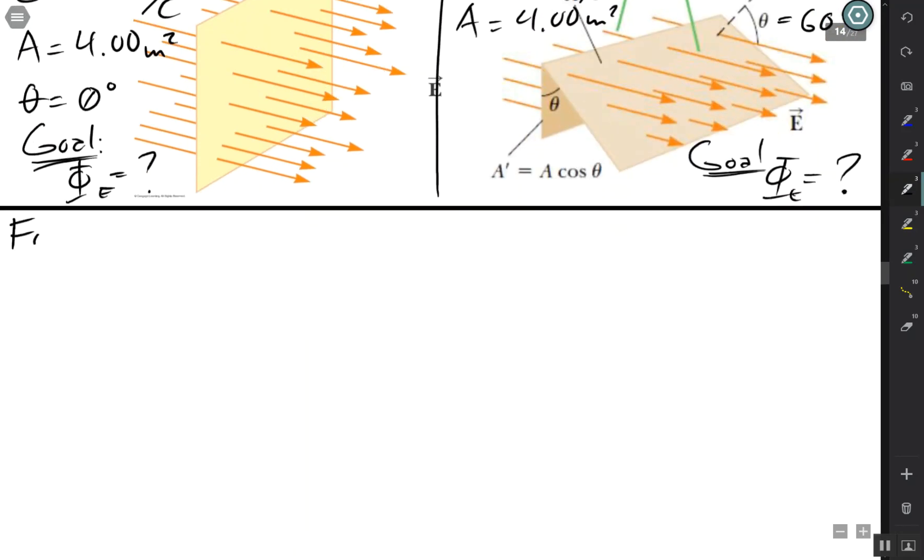The formula that we'll be using is pretty much the same formula: the product of the electric, the magnitude of the electric field, times the effective area and the angle.